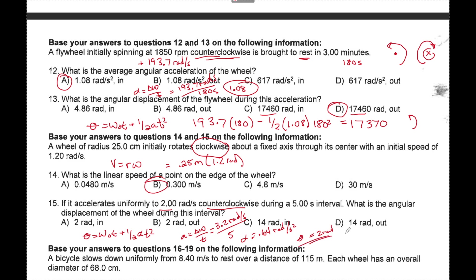At the end it's moving counterclockwise, so theta is going counterclockwise. Using the right-hand rule with fingers going in that direction gives 2 radians out of the page.